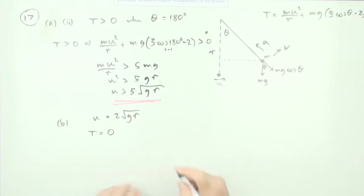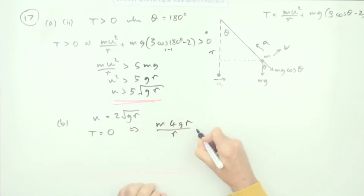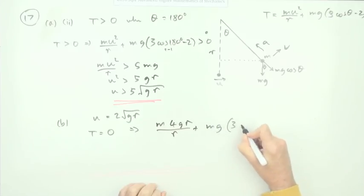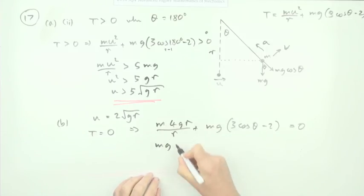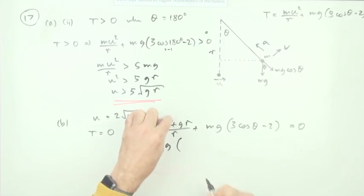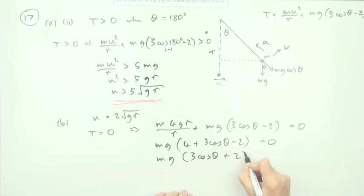It'll stop when the tension is zero. So that means substituting it into that: m times, now that squared would be 4gr over r, plus mg times 3 cos theta minus 2 should equal zero. Now there's an equation to solve. We'll just factorize it. There's a common factor here of mg. Take out mg, maybe the r goes, and you're just left with 4 plus 3 cos theta minus 2.